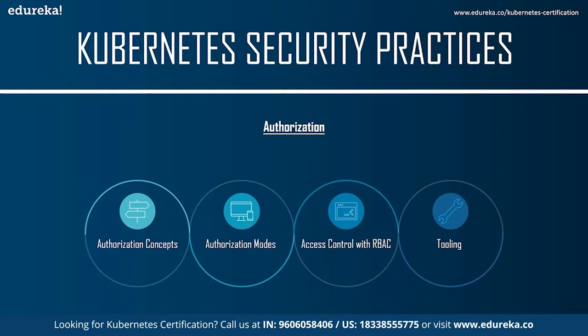Kubernetes offers multiple authorization modes: node authorization, attribute-based access control (ABAC), and webhook. The next important practice is access control with RBAC (role-based access control), originally developed at Red Hat in the context of OpenShift and upstreamed to Kubernetes, stable as of version 1.8. You should use RBAC for access control and not use ABAC or no authorization at all.